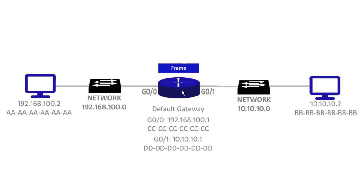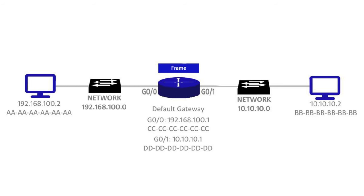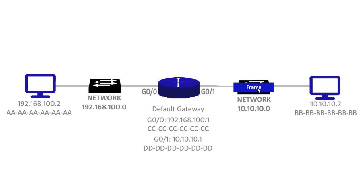The router opens the frame further and finds the IP packet. It looks at the packet header and sees the destination IP is 10.10.10.2. It doesn't change the destination IP address — it leaves that the same — but it puts the packet into a brand new frame with the MAC address header changed to all B's — BB-BB-BB-BB-BB-BB — the other host on the far right. It knows this by looking in its routing table and discovering that anything destined for the 10.10.10.0 network needs to be sent out the Gig0/1 interface with destination MAC address all B's. It then sends the frame out onto the network on the right.